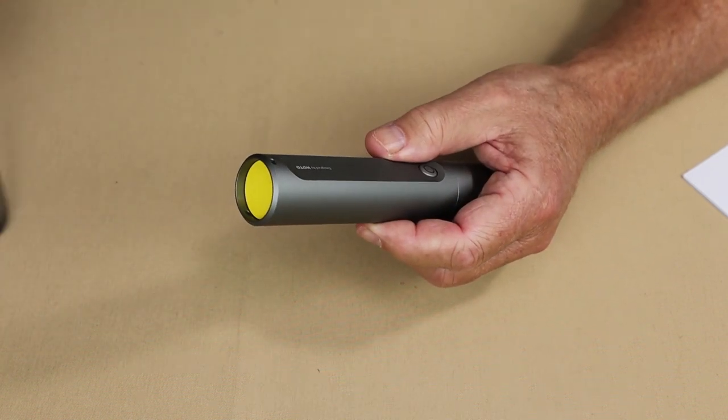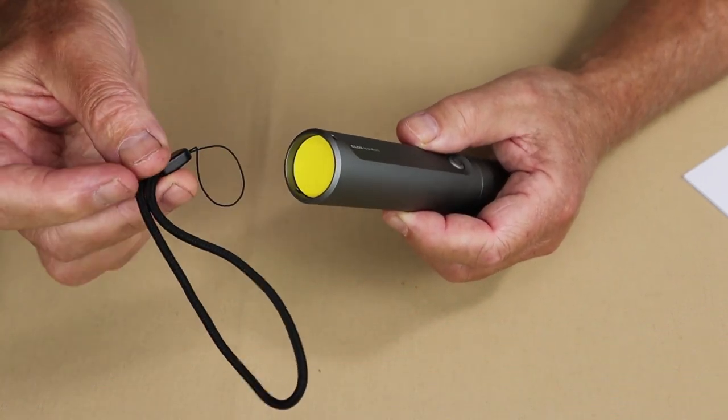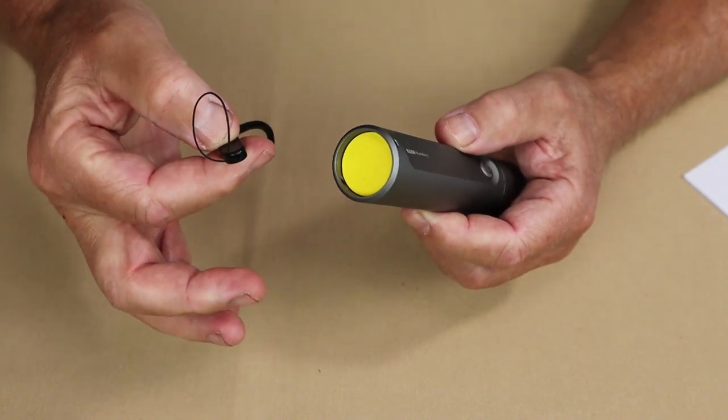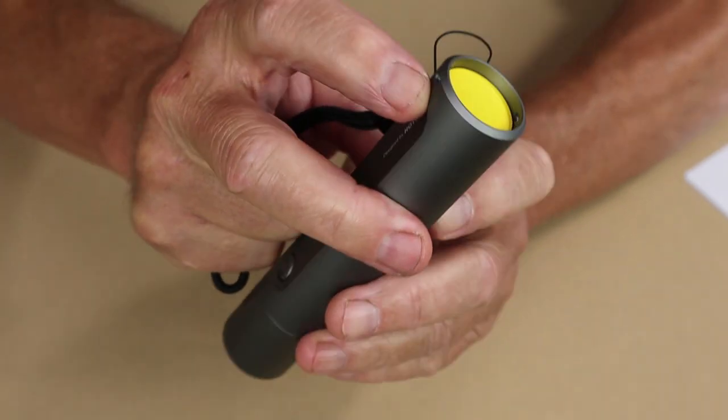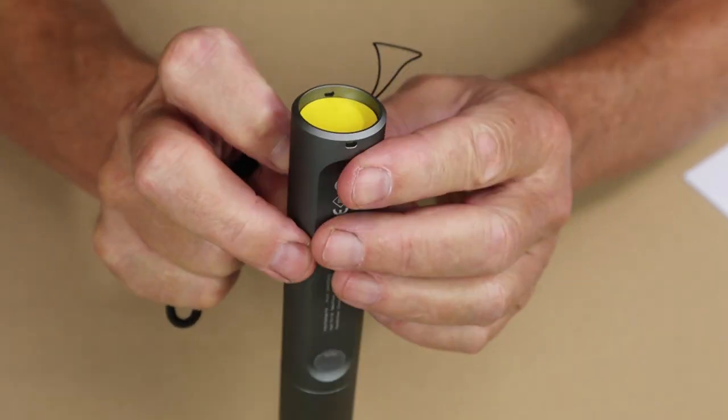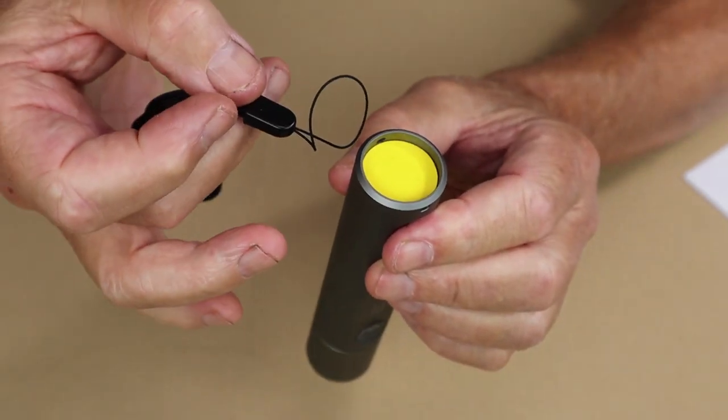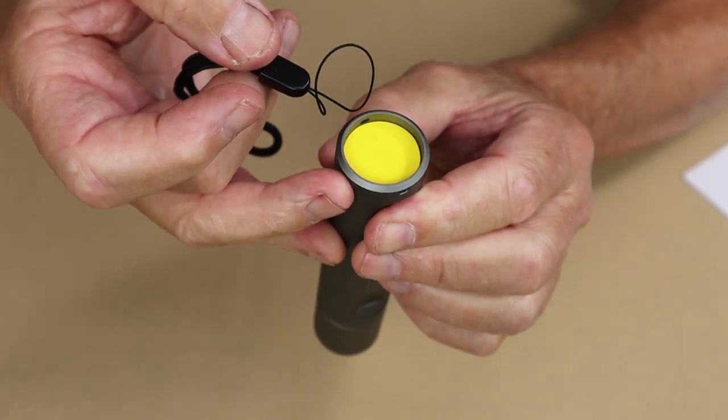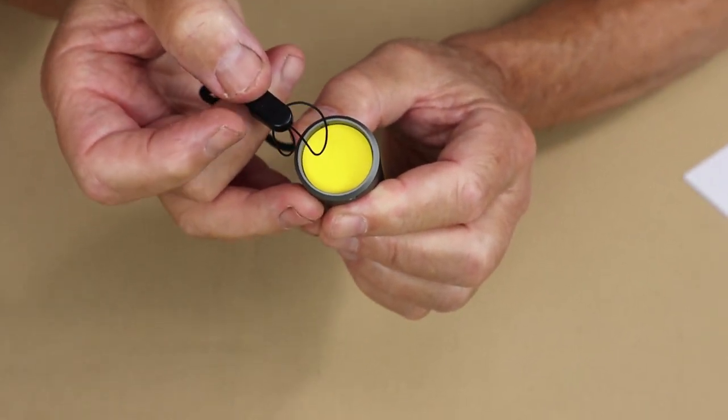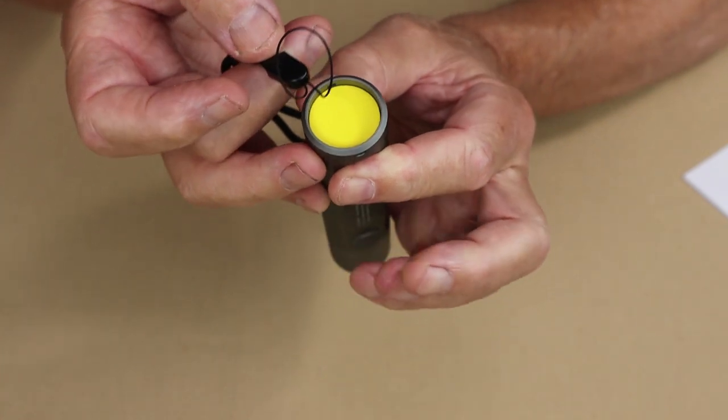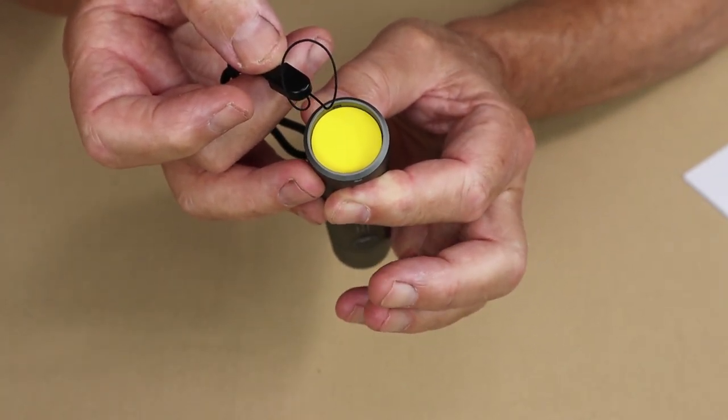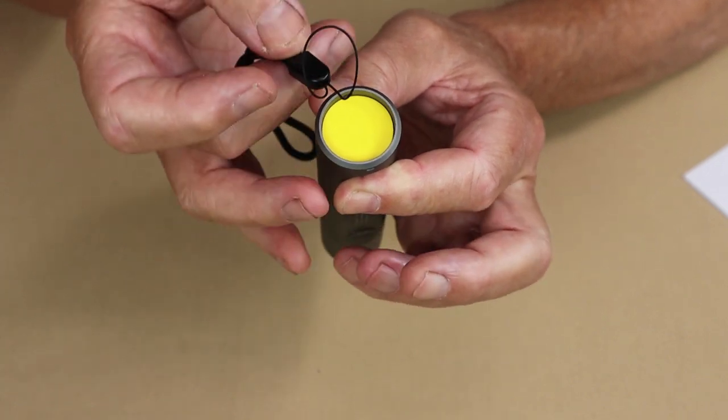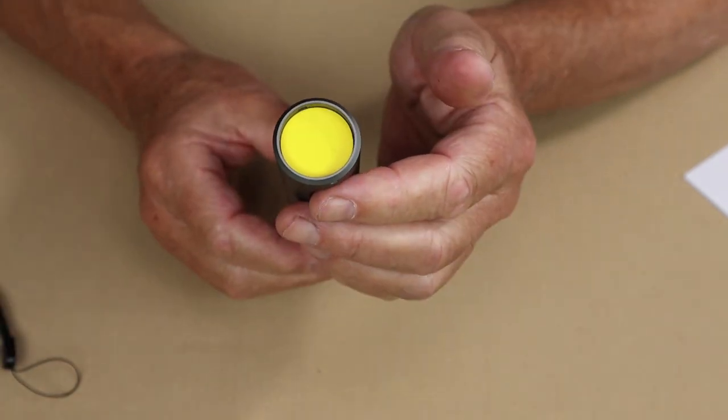A couple of things about the accessories. Number one, the lanyard. There are holes right here on either side, so you can mount the lanyard through the light. Honestly, I don't usually use a lanyard on my flashlights, but there may be an application for doing so with this light. I'll explain that in a moment.